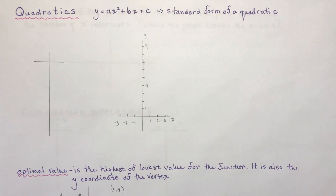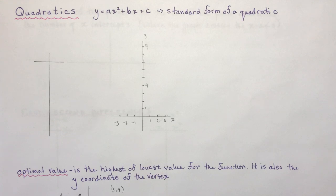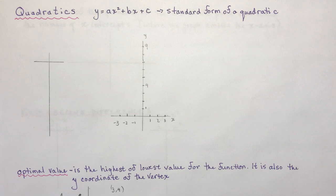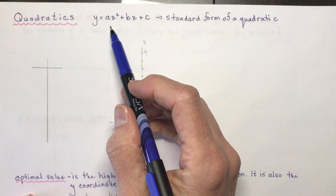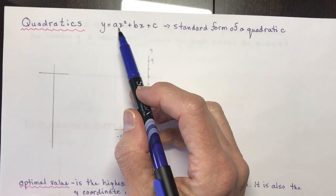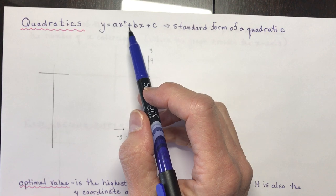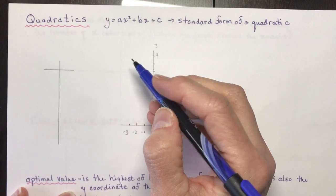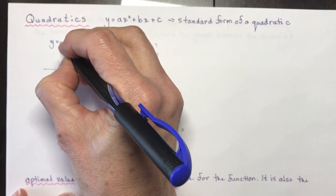This lesson is going to talk about the basic characteristics of quadratics. In particular, we're going to look at the graph of y equals x squared, what an optimal value is, what the vertex is, how to find the axis of symmetry, how many x-intercepts a parabola can have, and first and second differences. The standard form of a quadratic is y equals ax squared plus bx plus c.